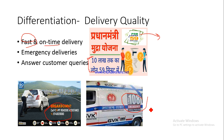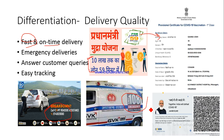You also have to be able to answer customer queries very quickly, and you can also provide easy tracking services. For example, your COVID vaccination certificate — once you have got your vaccination done, you can apply for easy tracking services. You can access not only your certificates but also all other related information, which will help you travel from one place to another.